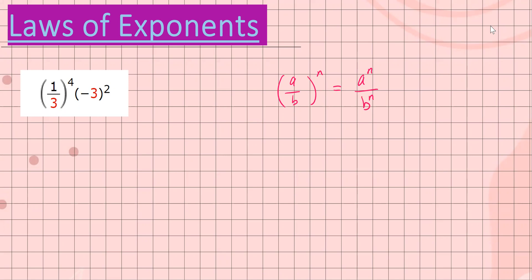So I'm going to do that for the first term. We simply have one to the fourth over three to the fourth, times negative three to the second. Now we can evaluate: one to the fourth — one to any power is always one. So that's one. Then we have three to the fourth, but let's keep it in exponential form because we want to simplify it with the term negative three to the second power.